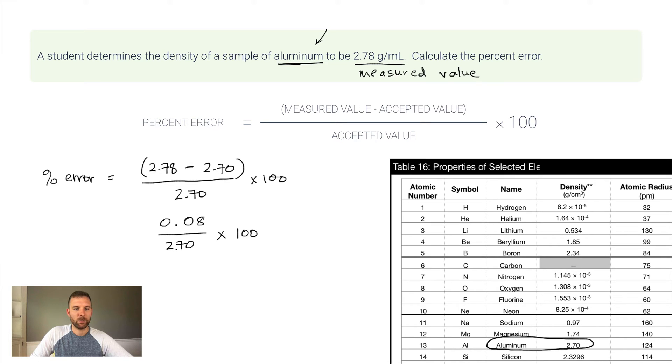I have one significant figure in 0.08 and three significant figures in 2.70. I'm not looking at the 100 for sig figs because that's not a measurement. I want one significant figure in my answer, which gives me 3%. Three percent is a pretty good percent error—obviously zero percent is best, but 3% is not bad.